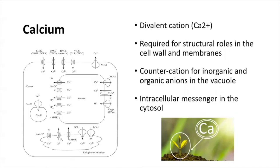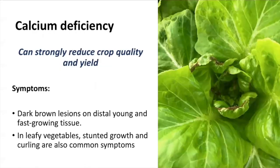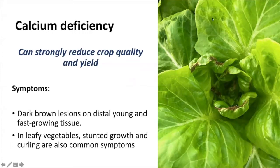Calcium also functions as a counter cation for anions in plant cell vacuoles, and also plays a role as an intracellular messenger in the cytosol. Calcium deficiency can be a common problem in indoor systems, including greenhouses and plant factories. It can affect crop quality and also yield. You can easily spot calcium deficiency by noticing brown necrotic lesions in new tissue. It can be present in fruits and also in leaves. Here we have a good example of calcium deficiency in lettuce.